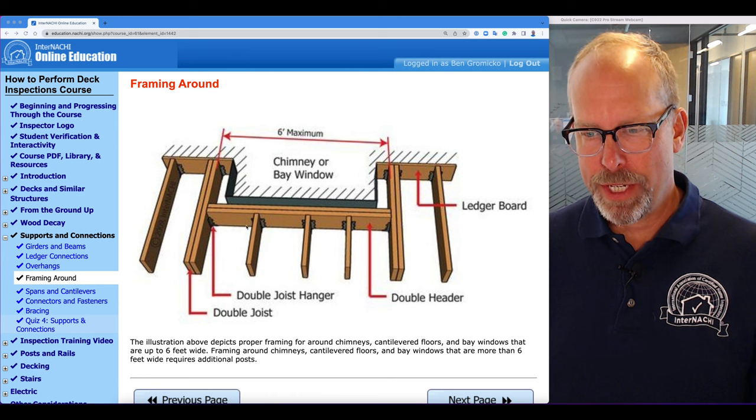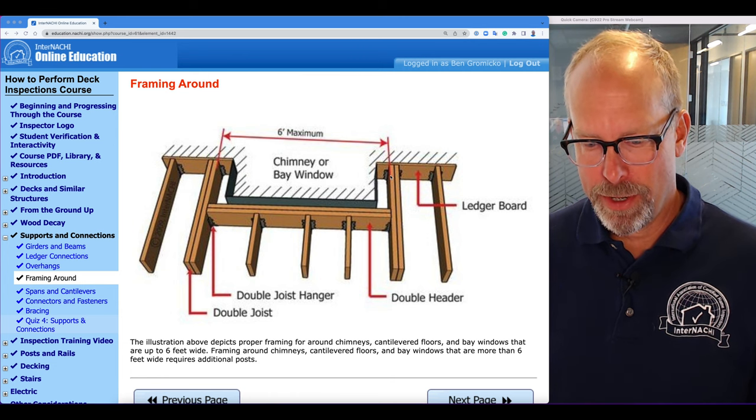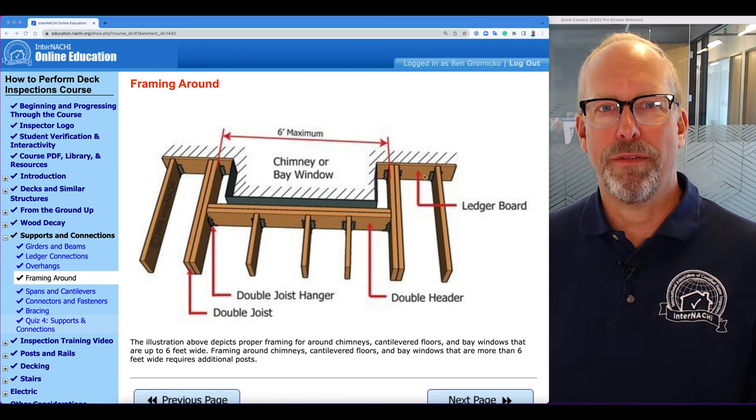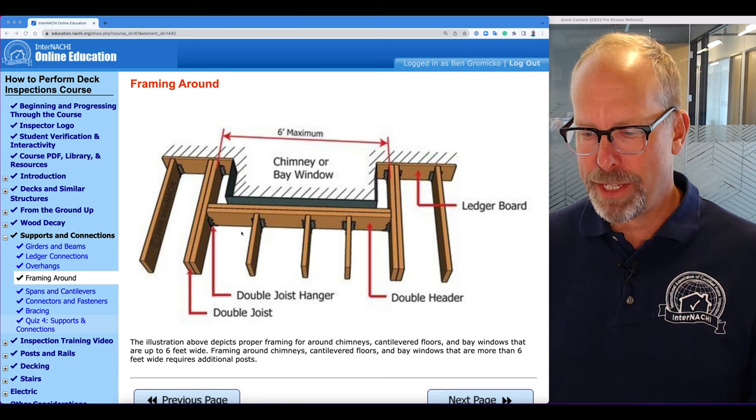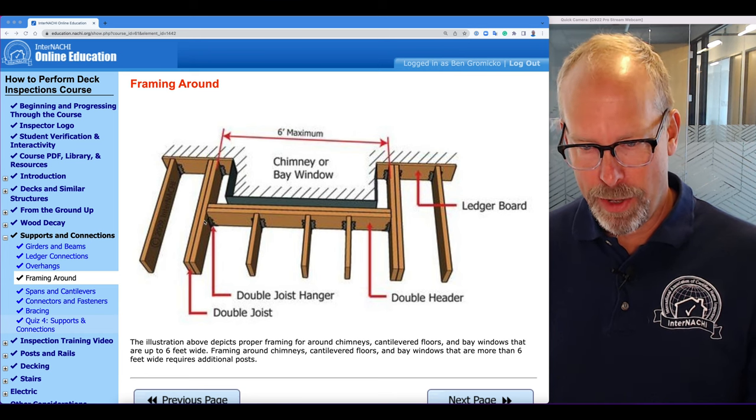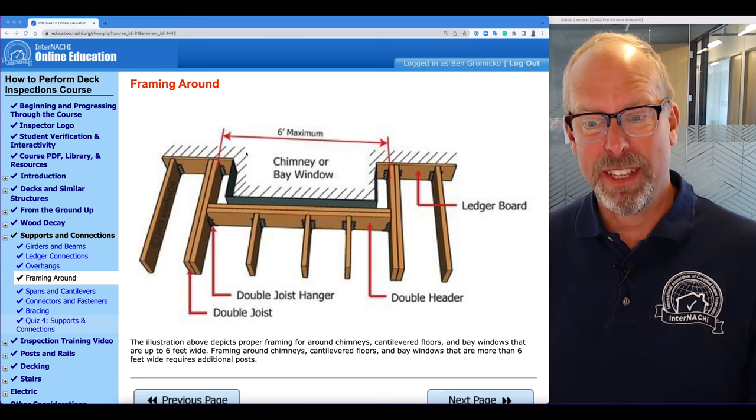This illustration here in the decks course shows proper framing for going around chimneys, a cantilevered floor, or a bay window that are very wide, like six feet wide.